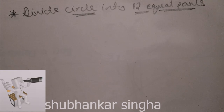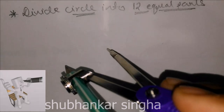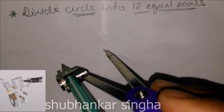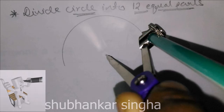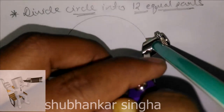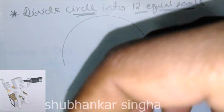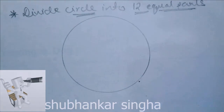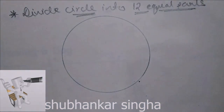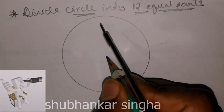First of all we have to take a circle of required radius — whatever radius we want. This is our circle, and now this is the center.